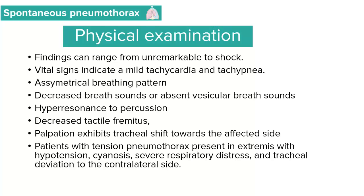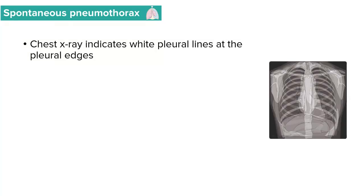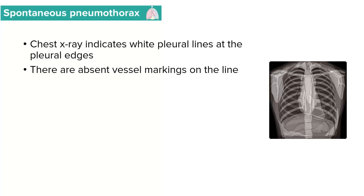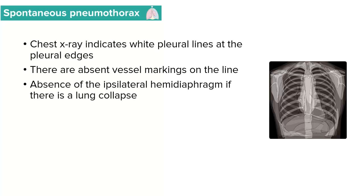Patients with tension pneumothorax present in extremis with hypotension, cyanosis, severe respiratory distress, and tracheal deviation to the contralateral or unaffected side. A chest X-ray will indicate white pleural lines at the pleural edges with absent vessel markings beyond the line, unlike a normal X-ray. There is also absence of ipsilateral hemi-diaphragm markings if the lung has collapsed.